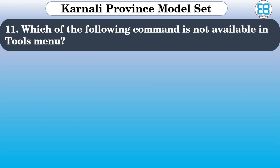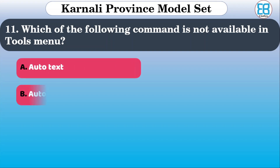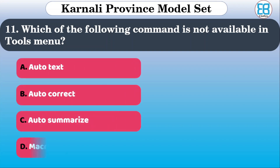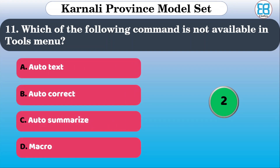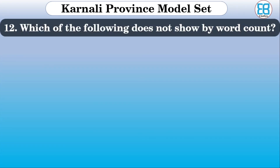Which of the following commands is not available in the Tools menu? The options are: format, auto level, auto text, auto summarize, macro. The correct option is Auto Text.